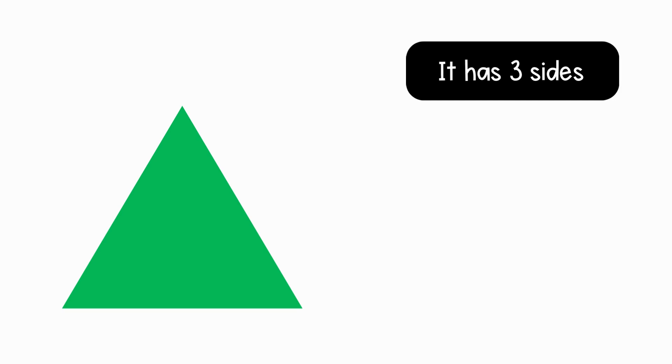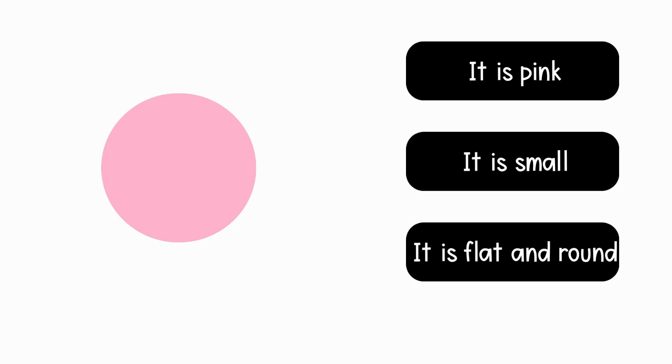Let's try one more. Which is a defining attribute for the circle? It is pink. It is small. It is flat and round. Being flat and round is an attribute that helps us determine that the shape is a circle.